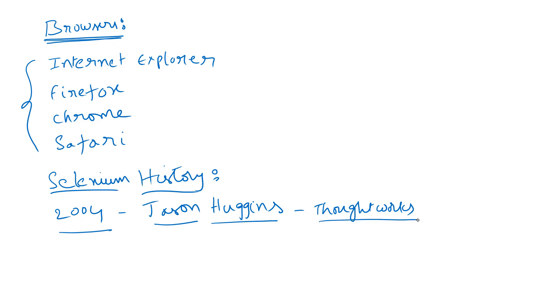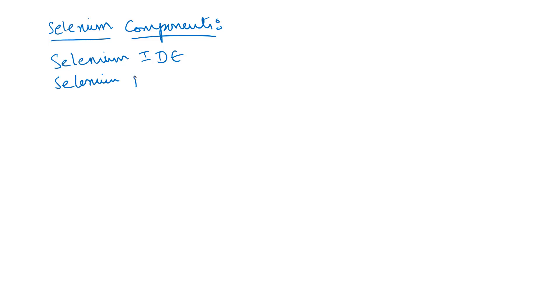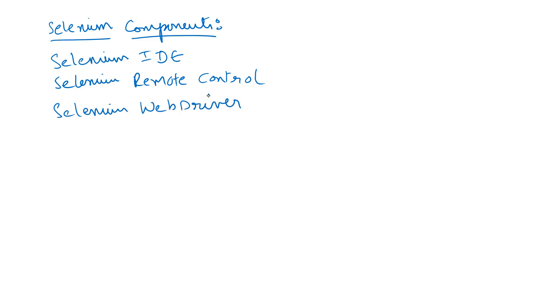Selenium is a set of different software tools each with a different approach to support test automation. Selenium mainly has four components: one is Selenium IDE, second is Selenium Remote Control, third is Selenium WebDriver, and fourth is Selenium Grid.